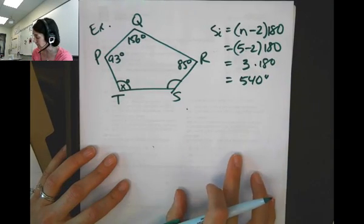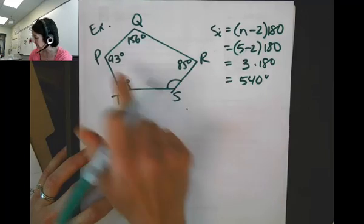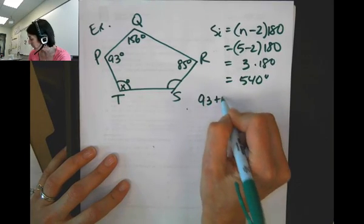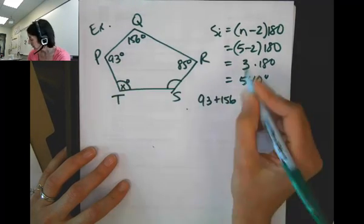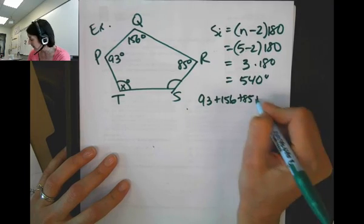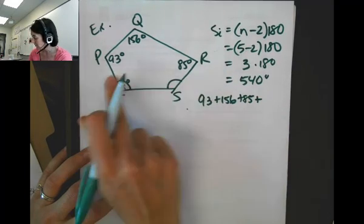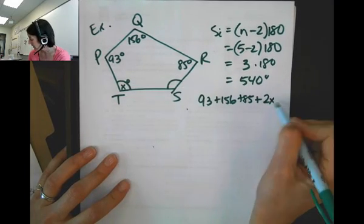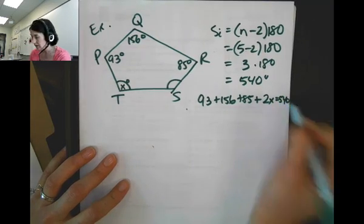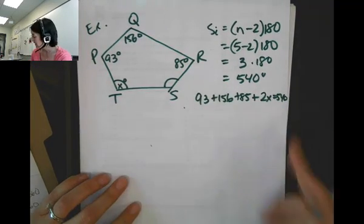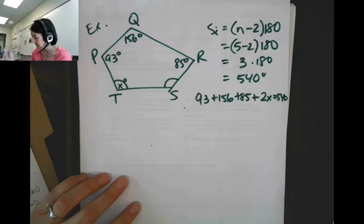So now I can set up an algebraic equation to solve for x, because I know that 93 plus 156 plus 85 plus 2x equals 540, almost out of space, and then I'm just going to solve for x.